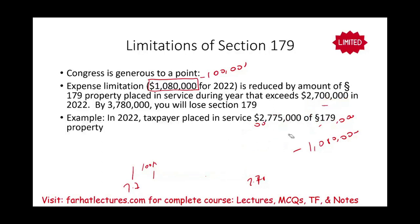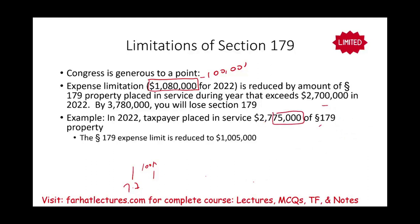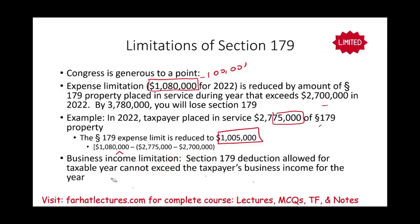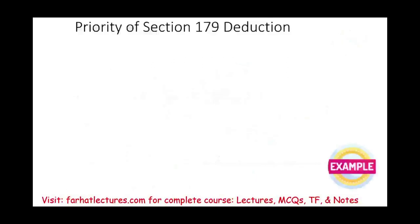There's another limitation called the business income limitation: Section 179 allowed for a taxable year cannot exceed the taxpayer's business income. So the maximum you can take is $1,005,000 — as long as you have at least $1,005,000 in business income. If you have less income than that, you are limited. There's a priority for Section 179: it's taken first, then first-year depreciation, then MACRS.